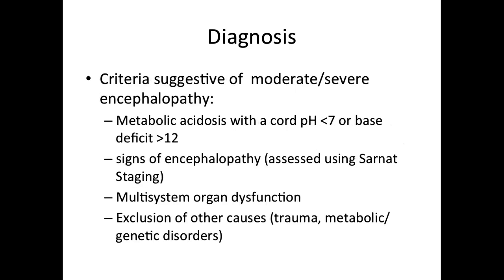The criteria used to determine if moderate or severe encephalopathy has occurred are: metabolic acidosis with a cord pH less than 7 or base deficit greater than 12, signs of encephalopathy assessed using Sarnat staging, multi-system organ dysfunction, and exclusion of other causes.